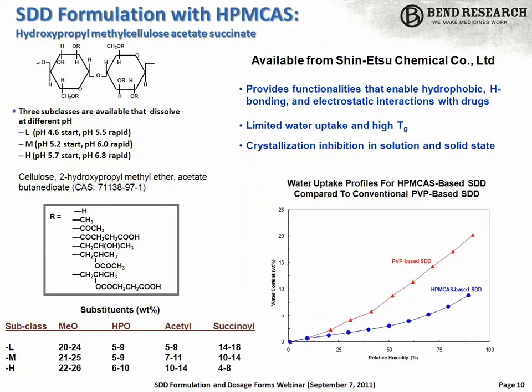That map was made specifically with the polymer HPMCAS in mind, although certainly the same principles apply to the use of other dispersion polymers. We often, but not exclusively, use HPMCAS polymer as our dispersion polymer choice. We do use others in some cases, but this is the one we use most often and have found most often to be the best polymer.